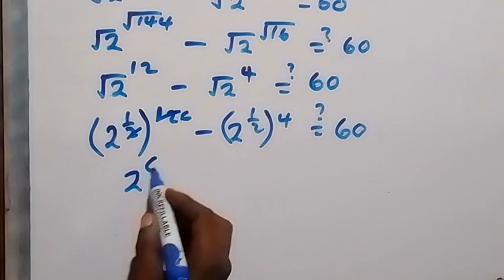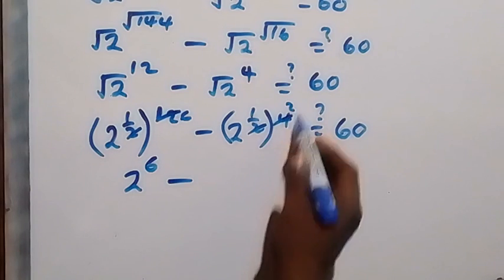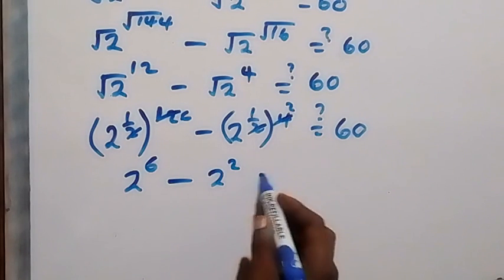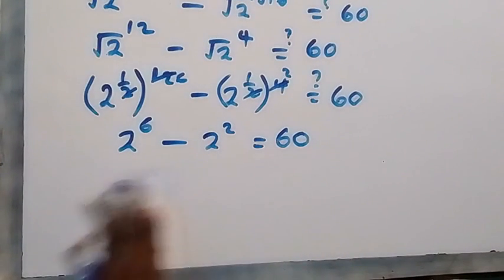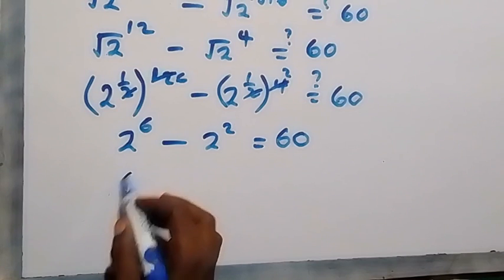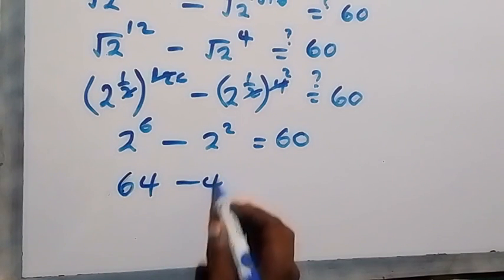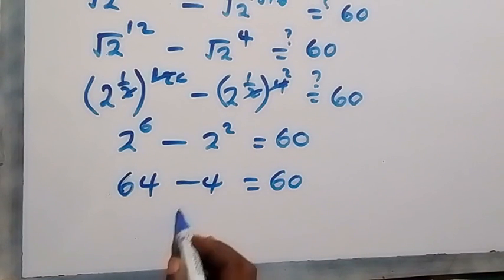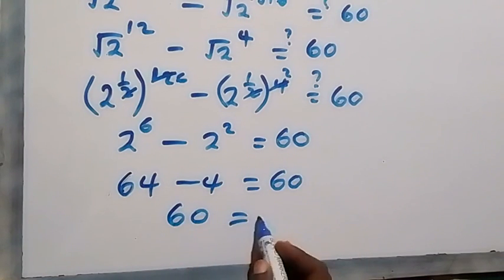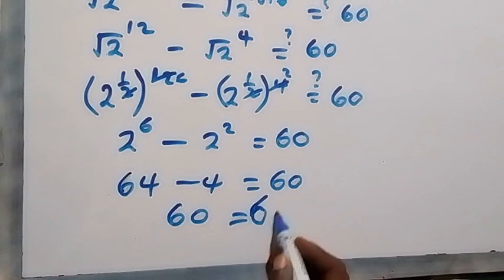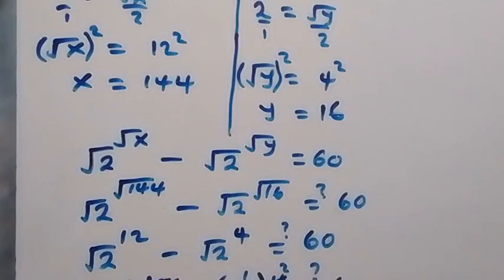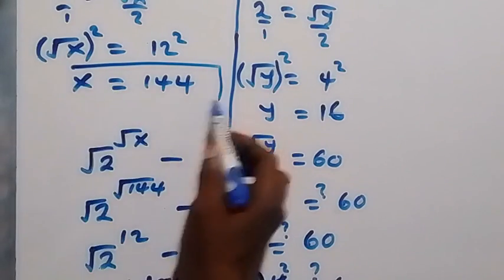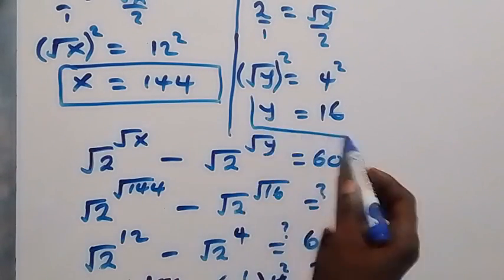So this is 2 raised to power 6 minus 2 raised to power 2, which equals 60. Then 2 raised to power 6 is 64. So we have 64 minus 4, which is 60, and this equals 60. Since the left-hand side equals the right-hand side, we can conclude: therefore the value of x is 144 and the value of y is 16.